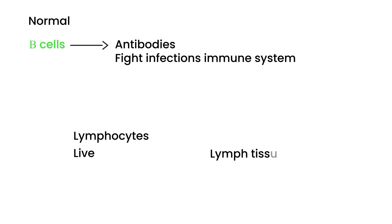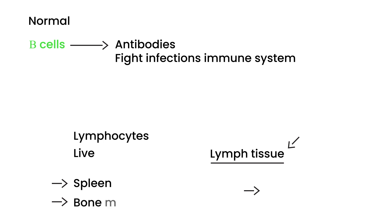This is very important because this is the part of the body we're going to be concerned with. Where is lymph tissue in your body? Lymph tissue exists in a lot of places. I'm going to mention three of the most important: the spleen, the bone marrow, and the lymph nodes. So when you have Hodgkin's, these are the parts of the body that can be affected.